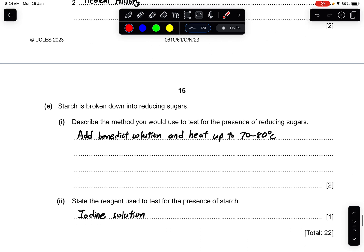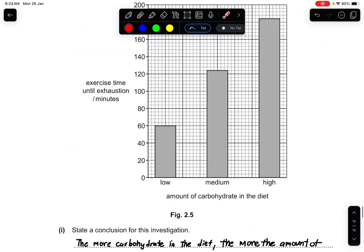Last part: Starch is broken down into reducing sugars. Describe the method you would use to test for the presence of reducing sugars. Add Benedict solution and heat it up to 70 to 80 degrees. Part two: State the reagent used to test for the presence of starch. Very simple - iodine solution.